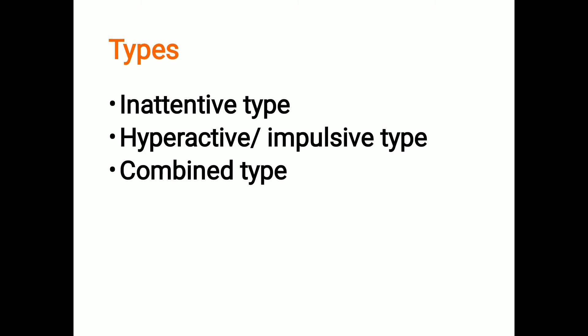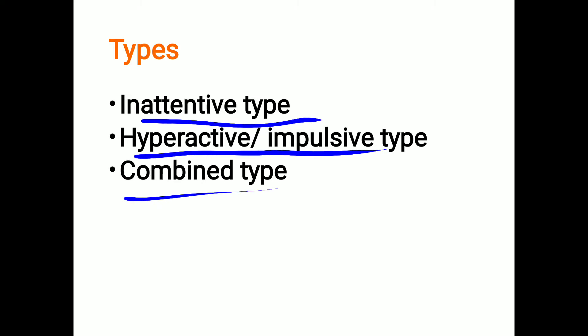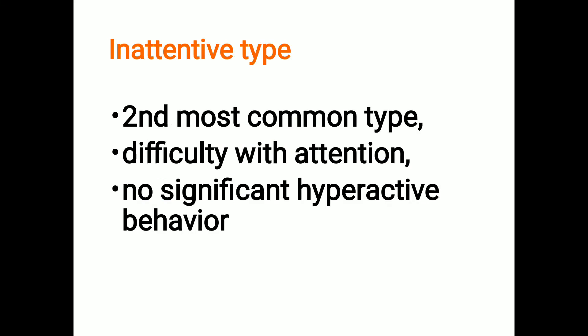There are three important types of ADHD: the first is inattentive type, the second is hyperactive or impulsive type, and the third is combined type, which is a combination of the above two. The inattentive type is the second most common type.